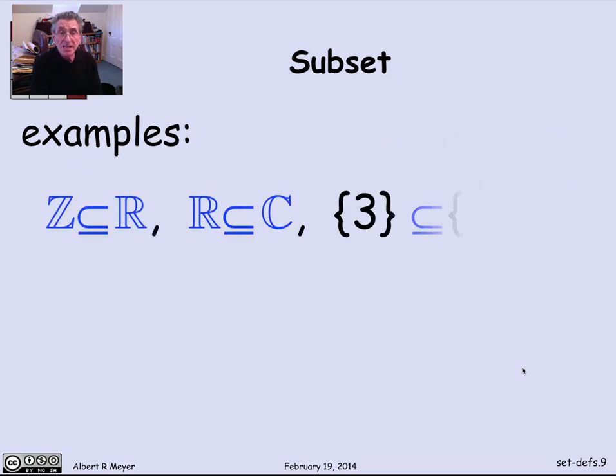So some examples of the subset relation are that an integer is a special case of a real number. So the set of integers is a subset of the real numbers. A real number is a special case of a complex number. So the real numbers are a subset of the complex numbers.